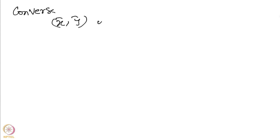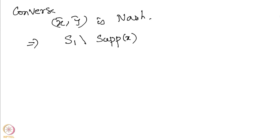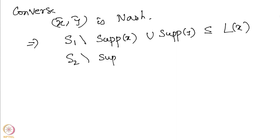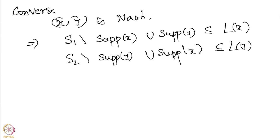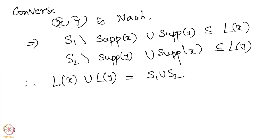Now let us look at the converse. Suppose (x̄, ȳ) the corresponding normalized strategies form a Nash equilibrium. This immediately implies S1 minus supp(x) union supp(y) is contained in Lx, and S2 minus supp(y) union supp(x) is contained in Ly. Therefore, Lx ∪ Ly = S1 ∪ S2, meaning the pair is fully labeled. This proves the theorem.